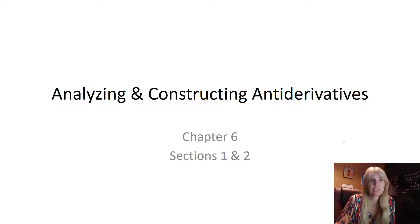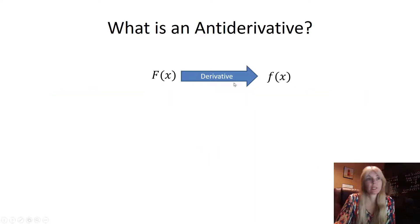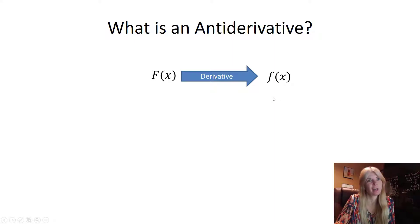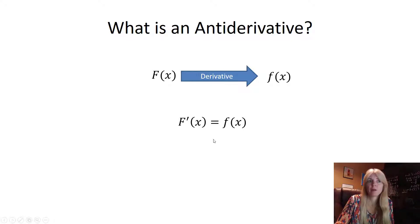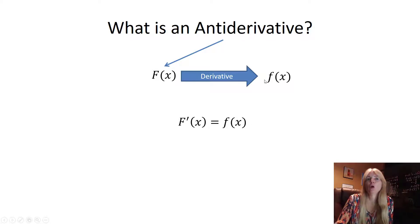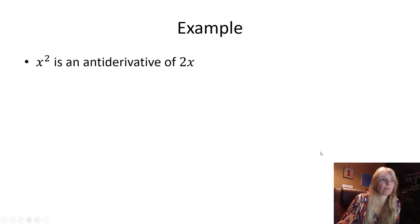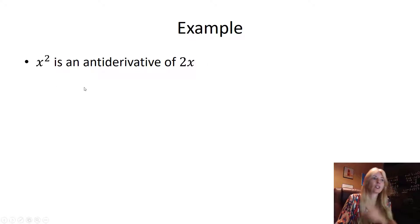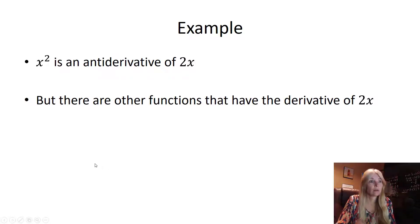Let's figure out what antiderivatives are. If I have a function and I take its derivative — note there's no prime notation used here, but that's what it means — I get a smaller f of x. The original function is what we're finding: the antiderivative. In other words, we know the derivative and want to work backwards to find the original function. x squared is an antiderivative of 2x.